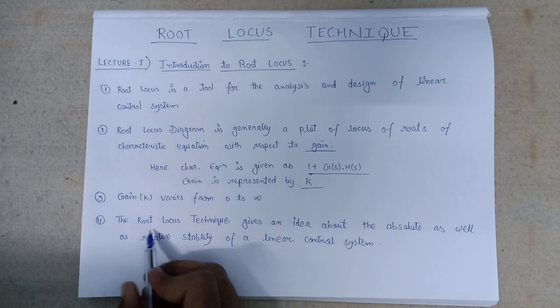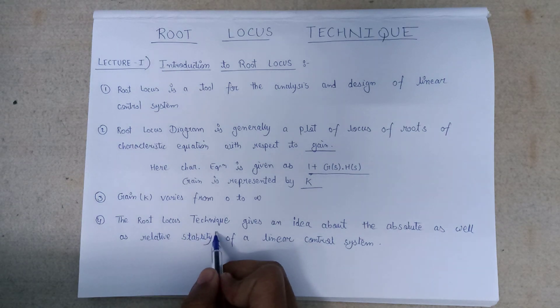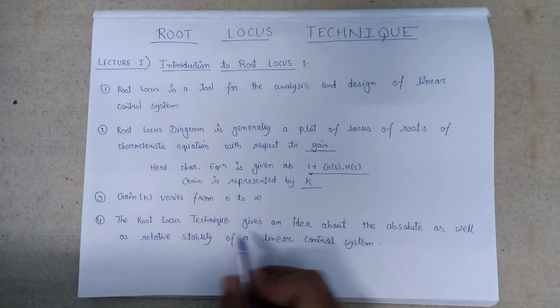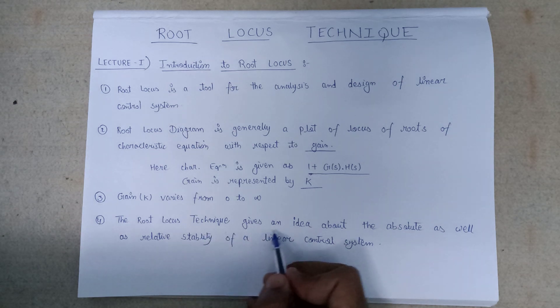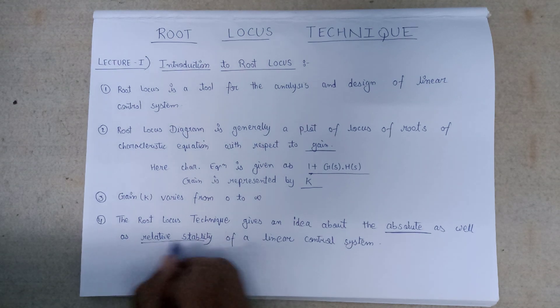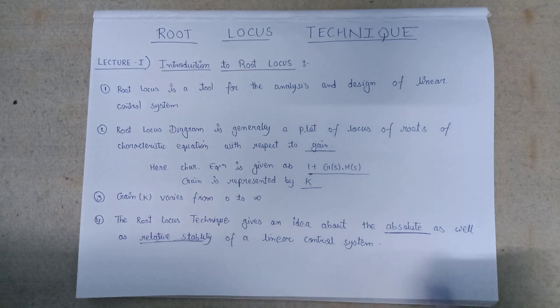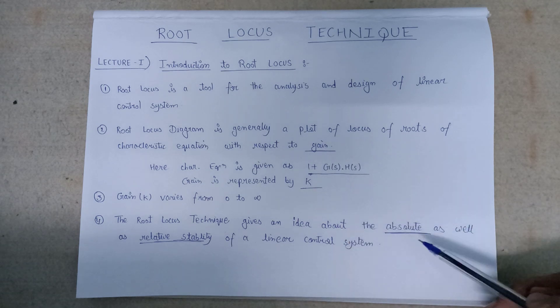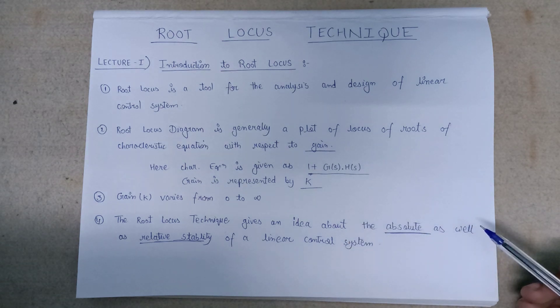of a linear control system. So this is the basic advantage of using root locus technique. It gives an idea about the absolute as well as relative stability of linear control systems. This is all about the introductory part of root locus. In the further videos we will discuss some important terms regarding root locus. Thank you.